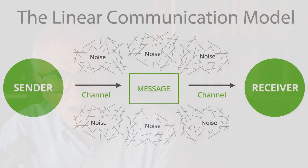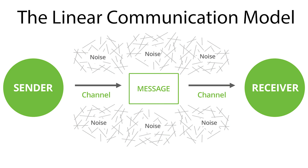The linear model is one of the two communication models that describe most communication. It is one-way, non-interactive communication. Examples could include a speech, a television broadcast, sending an email, or even this video. In the linear model, the sender sends the message through some channels, such as email, text, Slack, or even an old-school printed memo.